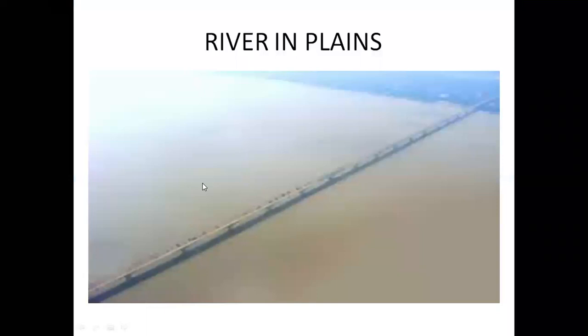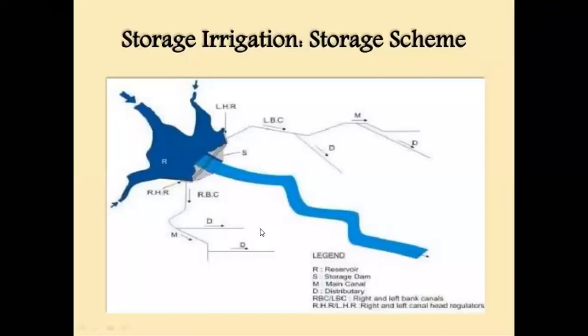Then this is the stage of river in plains. You can see huge cross-sectional area of the river, the velocity has toned down, and thus it has a huge amount of discharge. If at this stage you tap the river's water, you will get quite a lot of water. This is a simple diagram showing you how a storage scheme works.